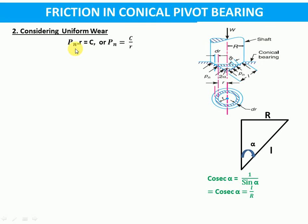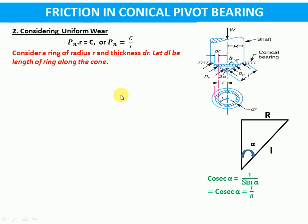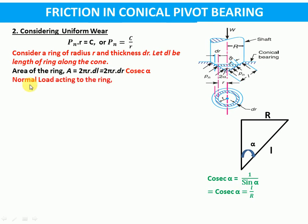Considering uniform wear, we know that the product of intensity of pressure into radius is constant, or we can write pn equals c by r. Same as before, consider a ring of radius r and thickness dr. Let dL be the length of the ring along the cone. Area of the ring will be 2πr·dL, and in place of dL we can write dr·cosecant alpha, so area becomes 2πr·dr·cosecant alpha. Now load acting on the ring will be pressure into area, that is normal pressure into area, so dWn will be pn times 2πr·dr·cosecant alpha.